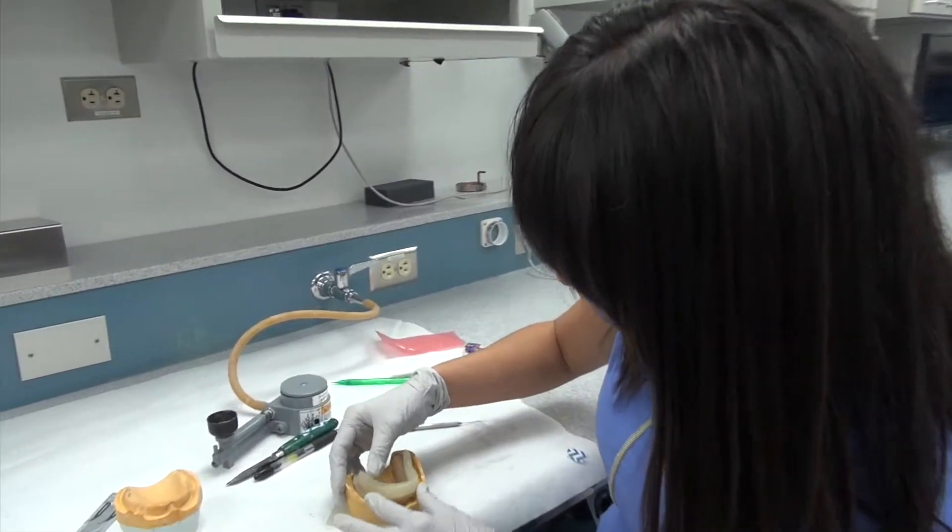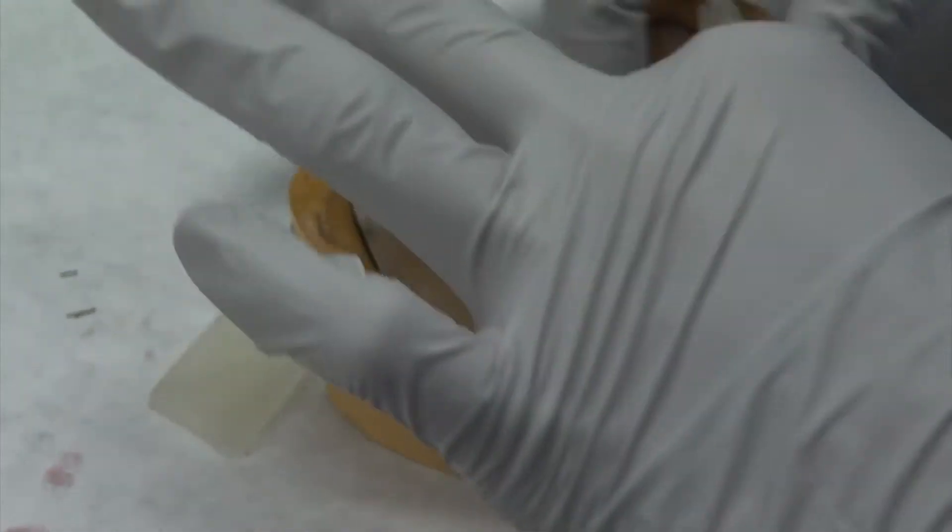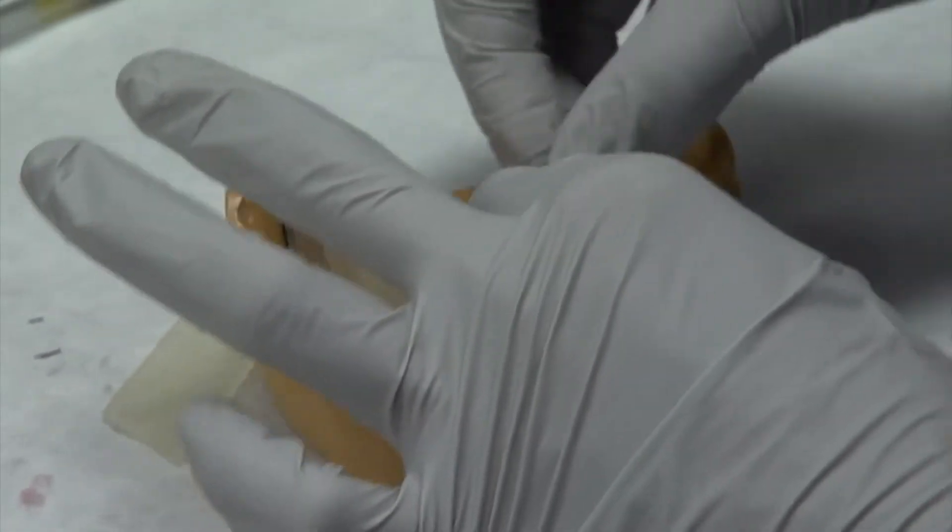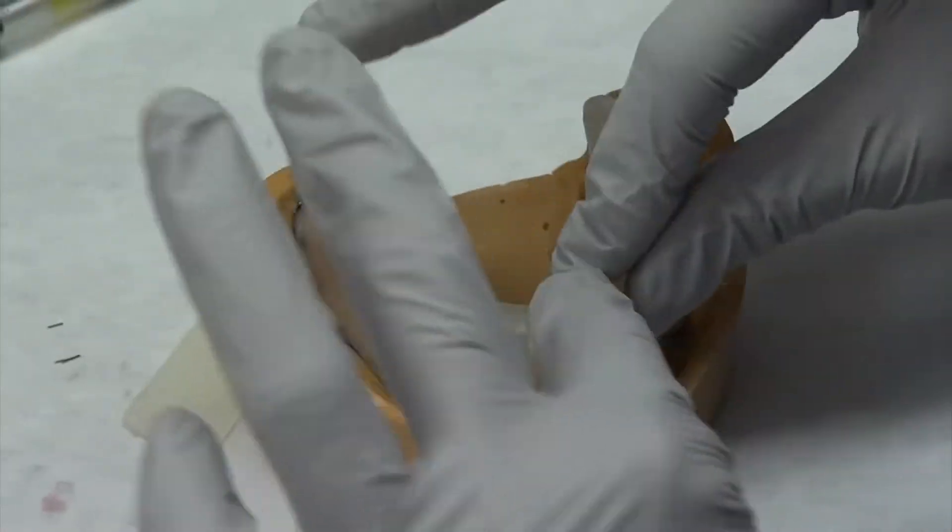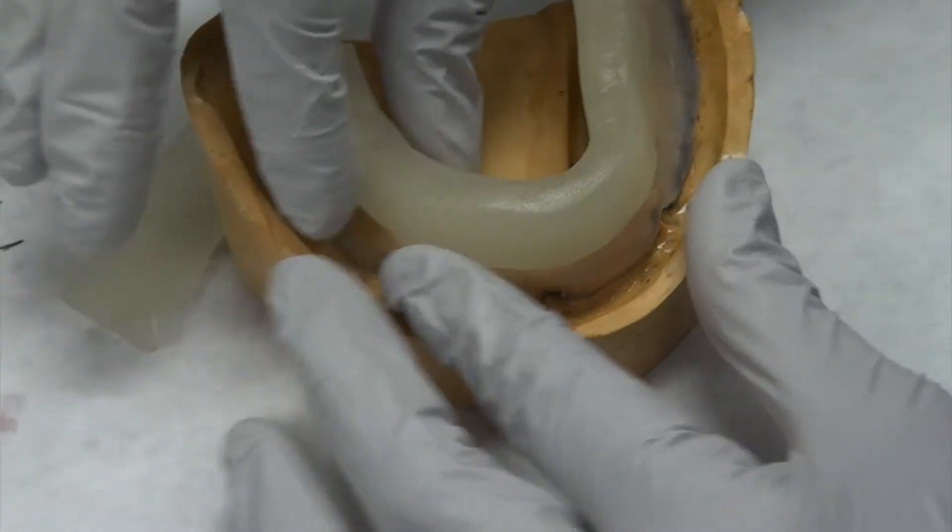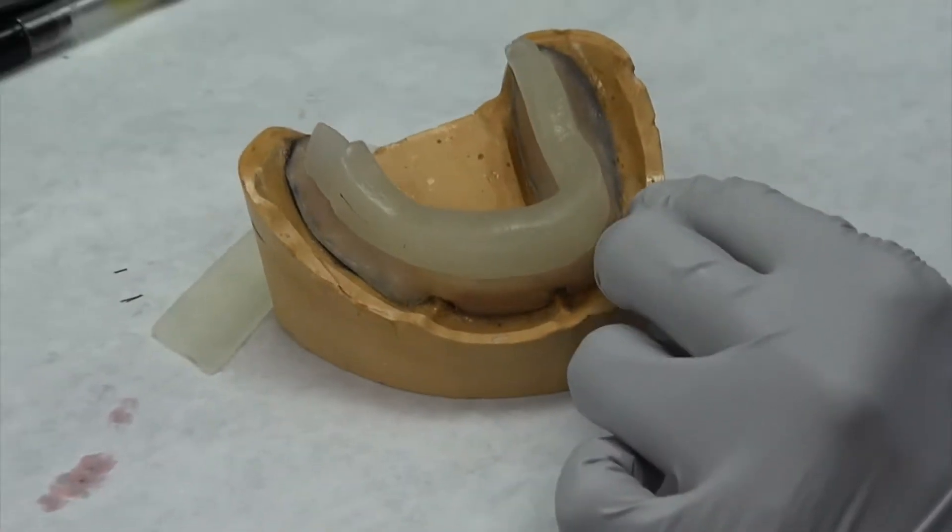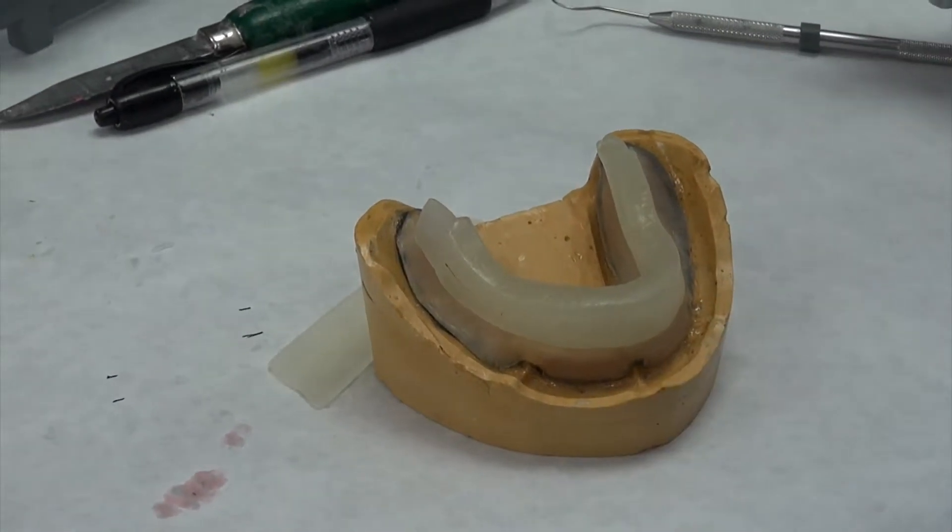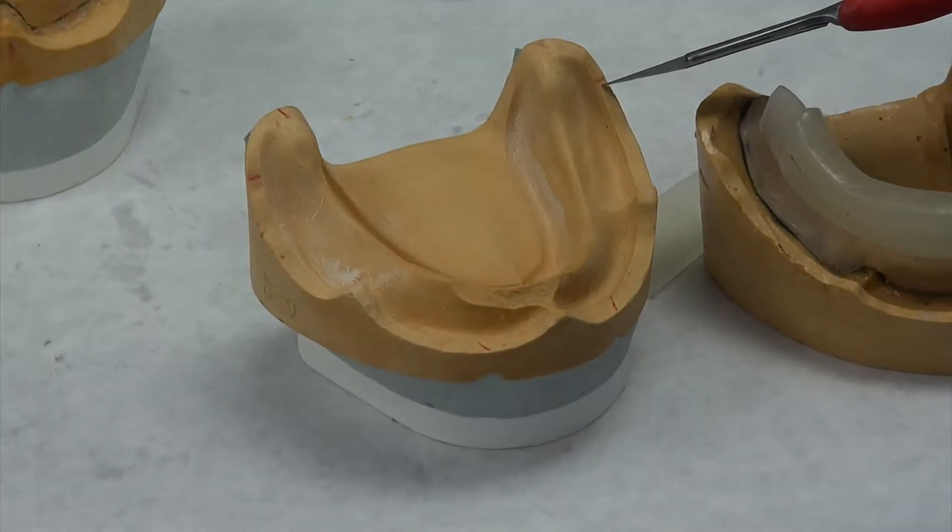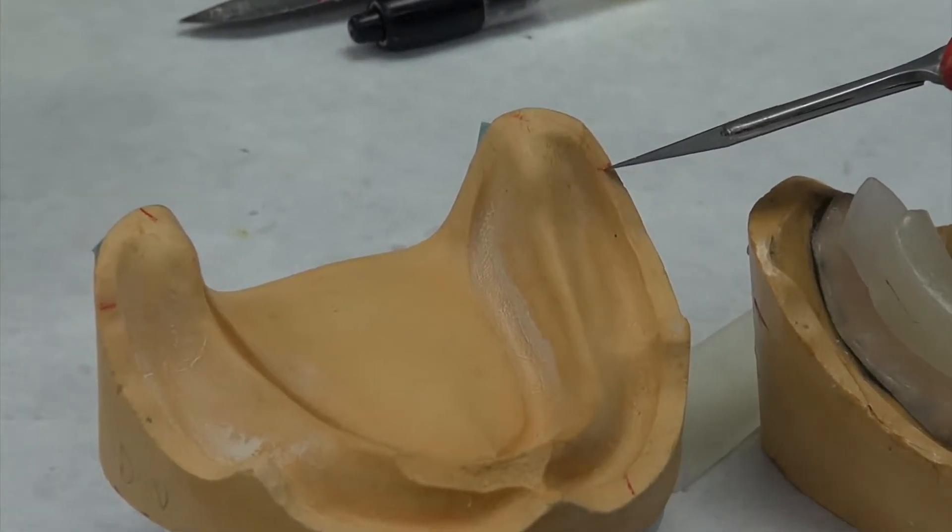So when you're replacing the mandibular, you're going to kind of glide it up the retromolar pad. But then just like you ended the maxillary at a really specific point, as you can see on this cast, you want to end the mandibular handle at about one half to two thirds the retromolar pad.